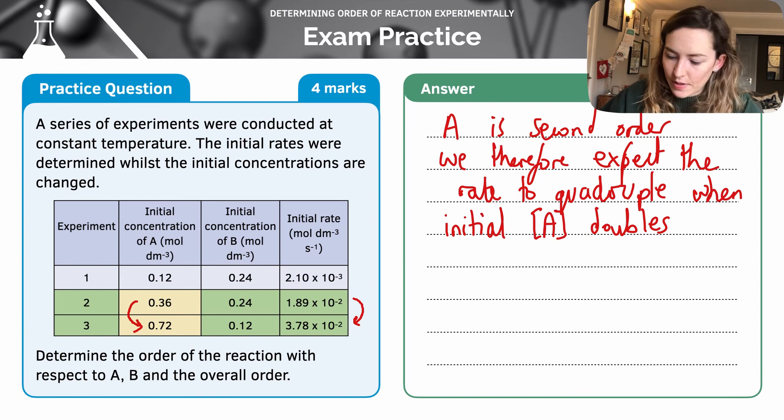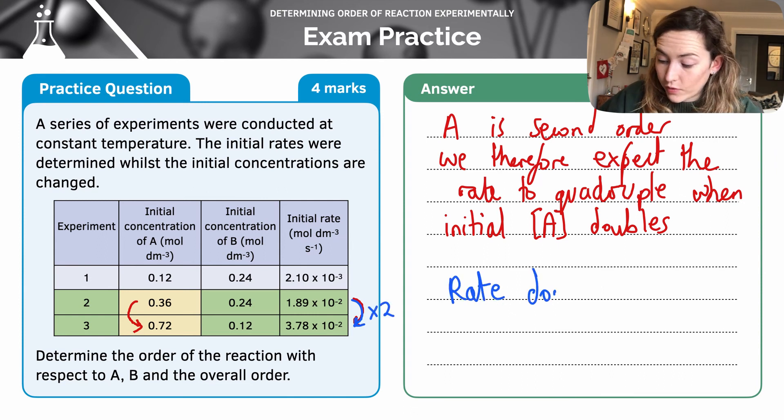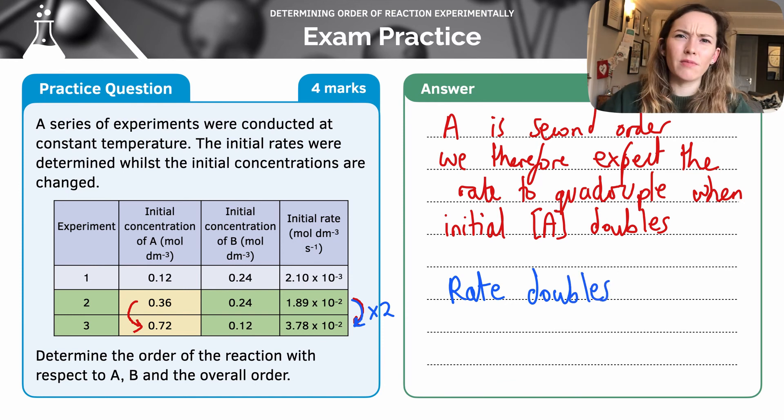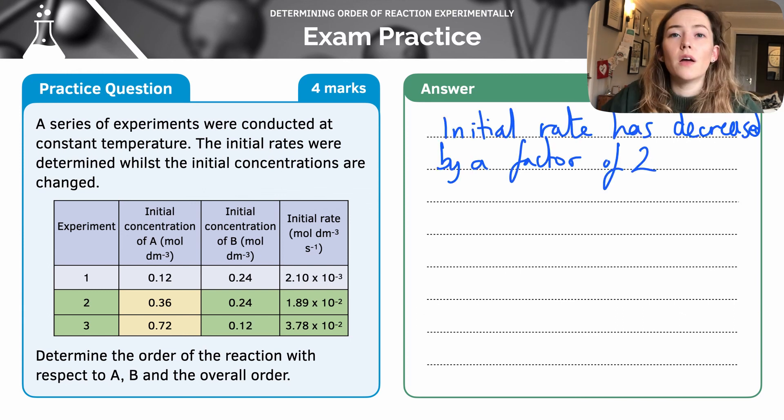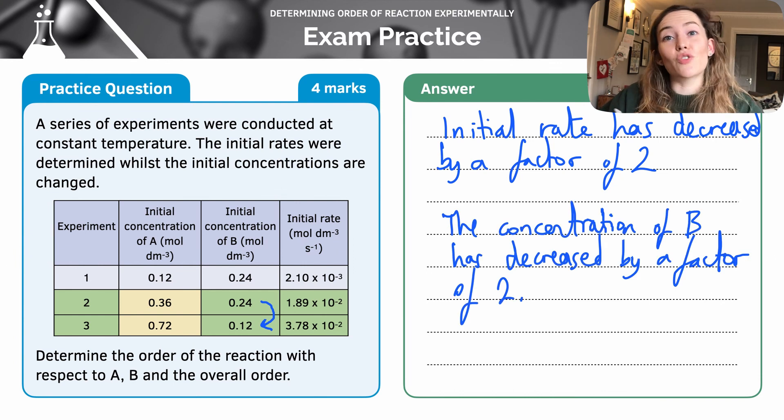But what actually happens is we have a doubling. So this is just a doubling, just times two. So the rate doubles between experiments two and three. So what does this mean? We were expecting it to quadruple, but it only doubled. So B is clearly affecting the rate. We can see that it's reduced it by a factor of two. And we can see from the table that the concentration of B has decreased also by a factor of two. So this is telling us that the rate of reaction with respect to B is first order.